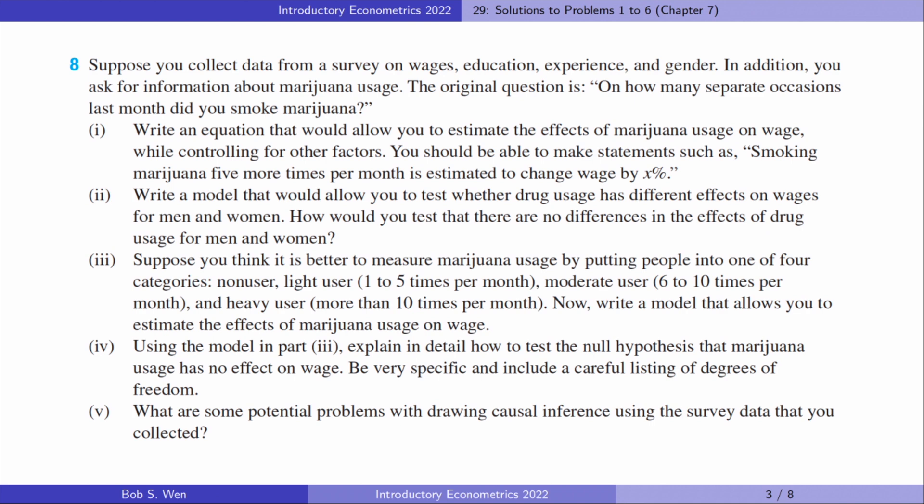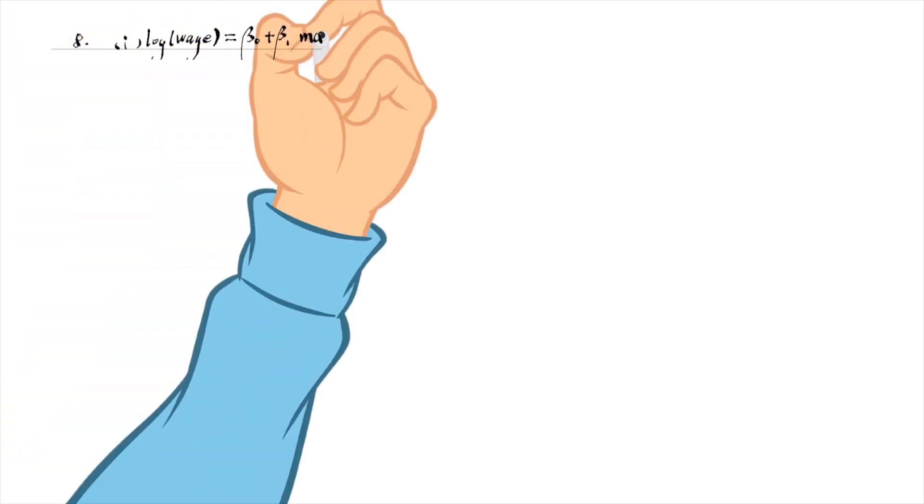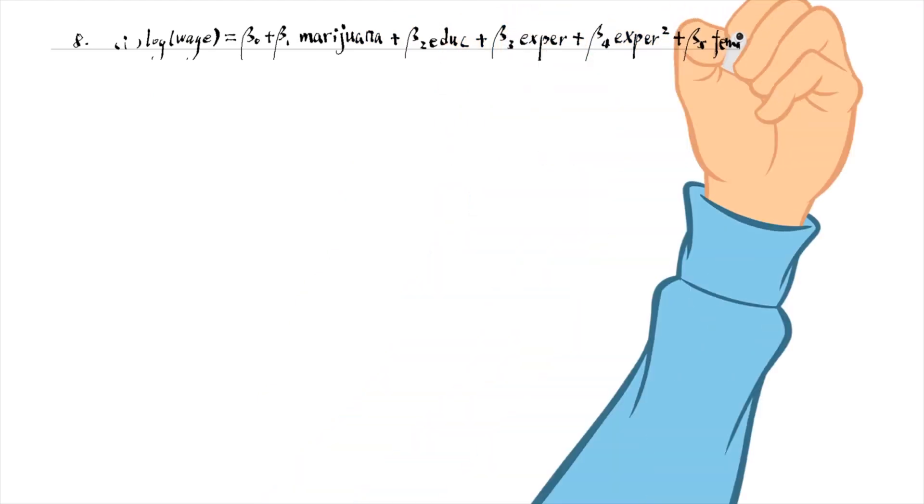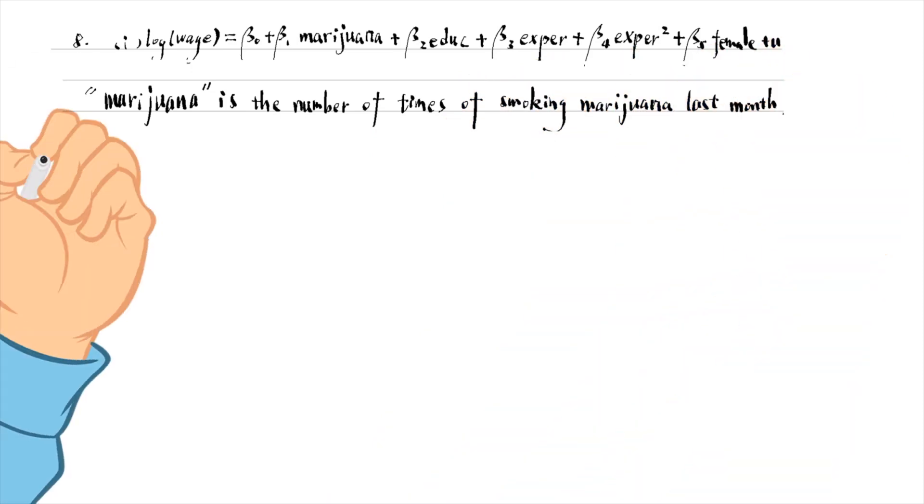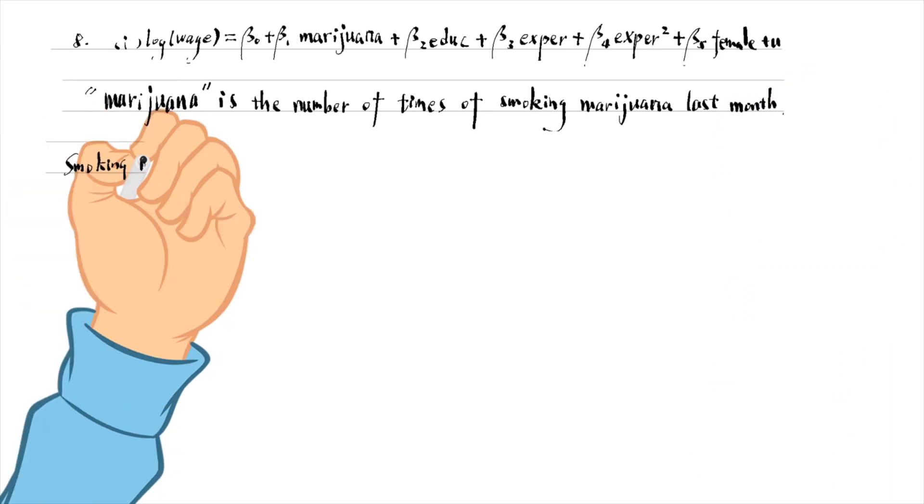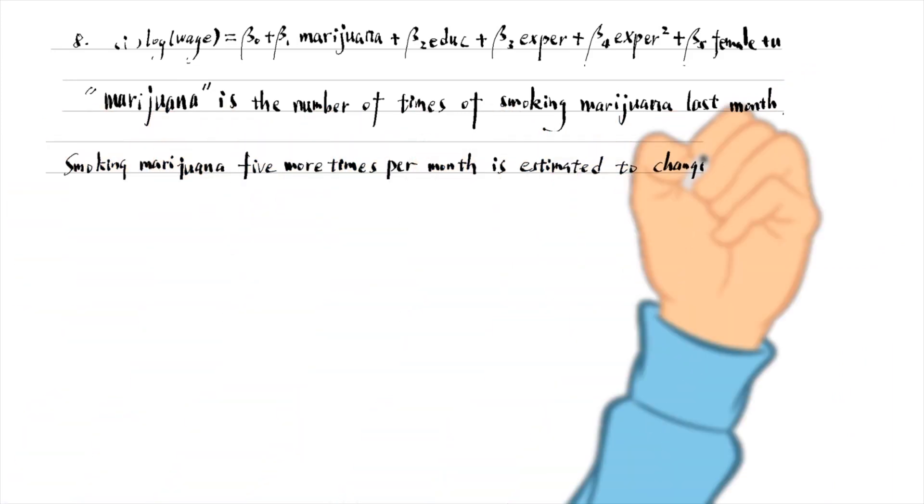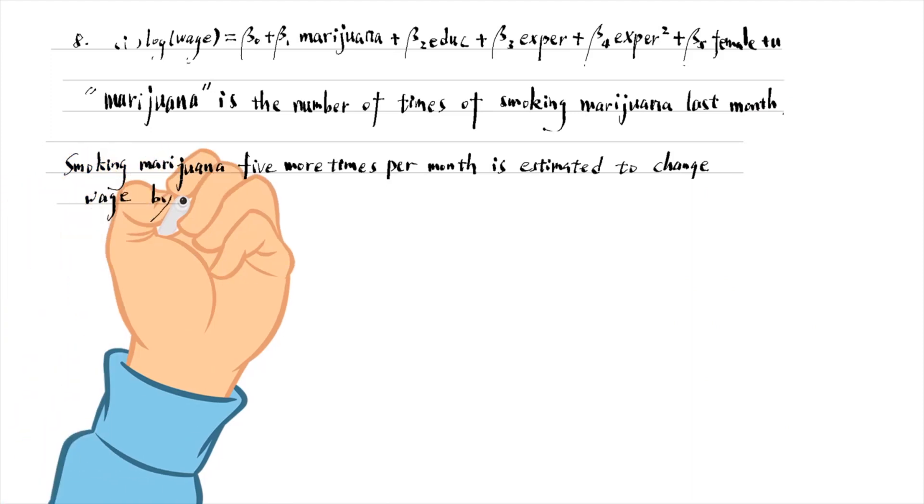Let's go to problem number 8. We can write the log of wage as a linear function of marijuana usage, education, experience, and gender. Experience has been entered as a quadratic to allow a diminishing effect of experience on wage, and a turning point. The key variable, marijuana, is the number of times smoked marijuana last month. Smoking marijuana five times per month is estimated to change wages by 100 times 5 times beta 1 hat percent.